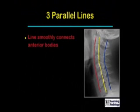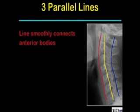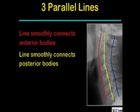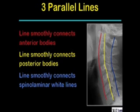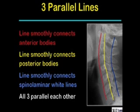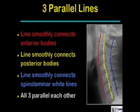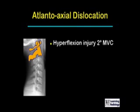Also important are the three parallel lines that you can imagine on every lateral view of the cervical spine. The red line should smoothly connect the anterior aspects of all of the vertebral bodies. The yellow line should smoothly connect the posterior aspects of all the vertebral bodies. The blue line should connect the junction between the spinous process and the lamina, called the spinal laminar white lines, in a smooth curve. All three of these lines should parallel each other smoothly.